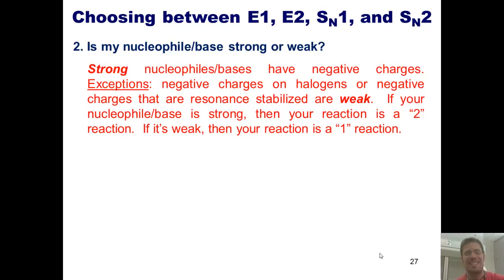Now remember from our previous discussions, strong nucleophiles slash bases have negative charges. Now there are some exceptions to this. Negative charges that are on halogens, or negative charges that are resonance stabilized, are weak. If your nucleophile slash base is strong, then your reaction will be a 2, either SN2 or E2. If it's weak, then it will be a 1, either SN1 or E1.